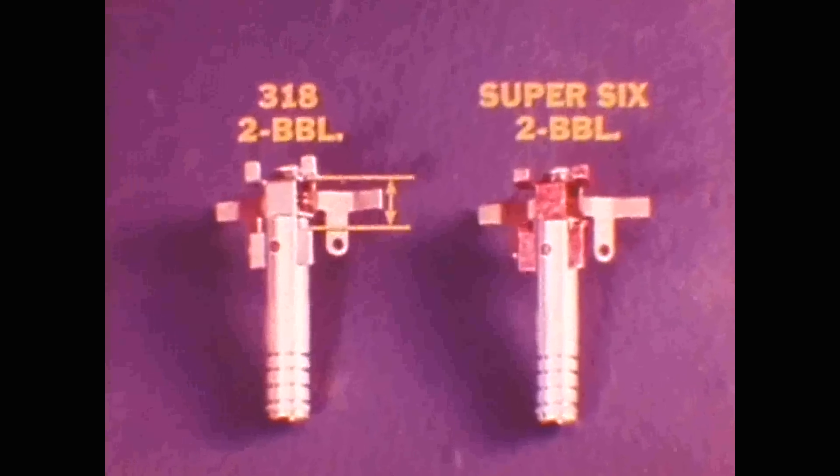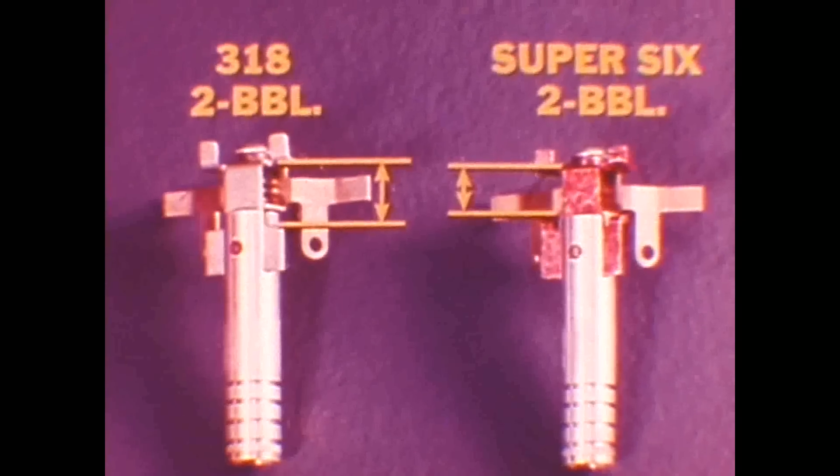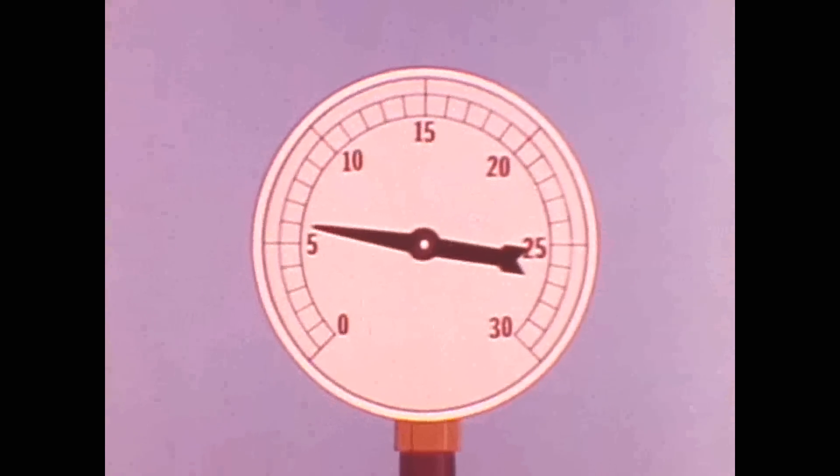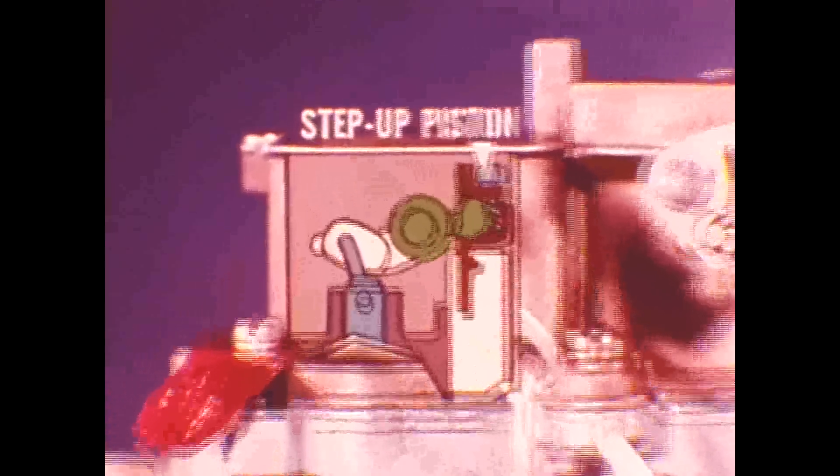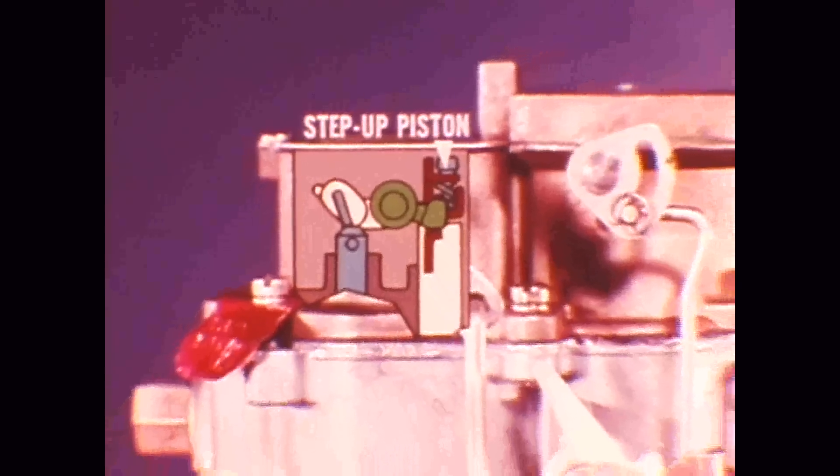Talking about emission control, the vacuum step-up piston on Super 6 carburetors has a limited amount of free travel as compared to the 318 version. This restricted movement is accomplished by reducing the dimension between the upper and lower stops. As a result, when manifold vacuum drops during a light throttle heavy load operation, the piston spring can only force the piston and metering rods upward a slight amount. Therefore mixture levels do not become excessively rich.